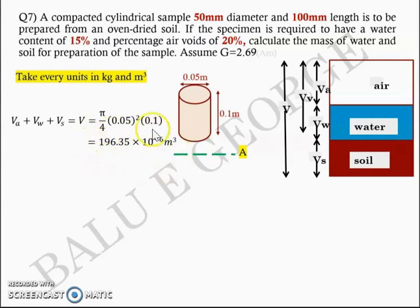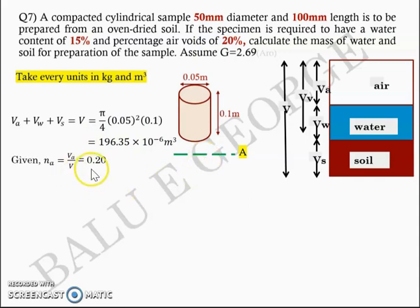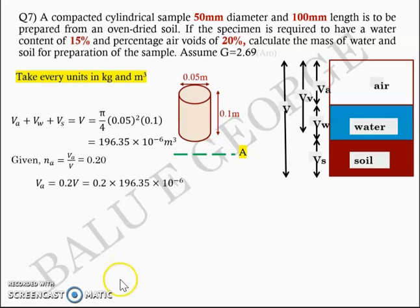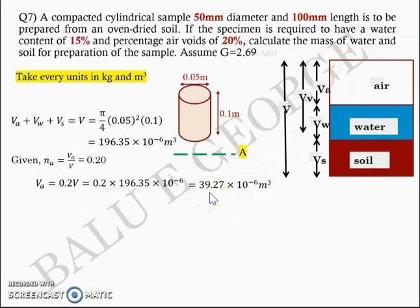Our question is to find the mass of solid soil and mass of water which, when compacted at water content 15% and percentage air voids 20%, will give a total volume of 196.35 × 10⁻⁶ m³. The percentage air voids NA is given as 0.2, meaning VA/V = 0.2. On cross multiplication, VA = 0.2 × total volume = 39.27 × 10⁻⁶ m³. Let us mark that as equation number 1.